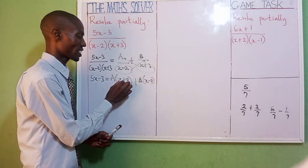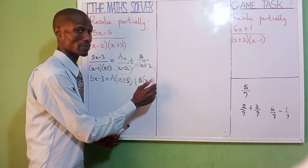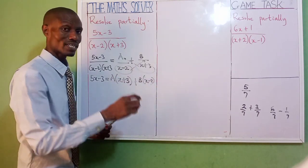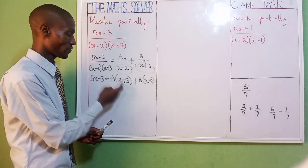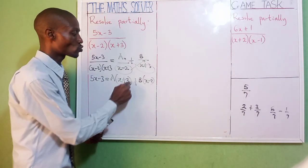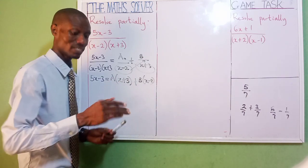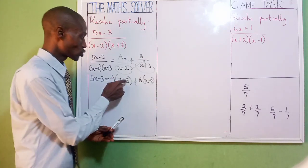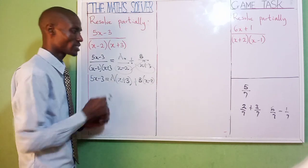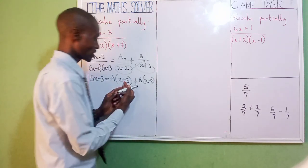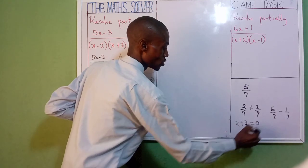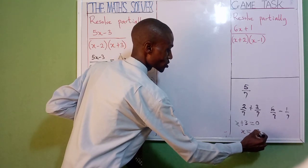Look at the first bracket — we have x plus 3. The second is x minus 2. We are going to eliminate the brackets one after the other. For the first bracket, to eliminate it, it needs to equal 0 — that is, to eliminate, to remove something completely. So each of these brackets will be equal to 0. I have this one now going to be equal to 0. Write: x plus 3 equal to 0.